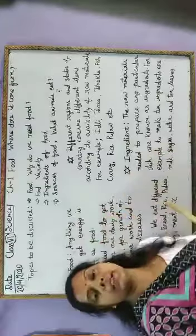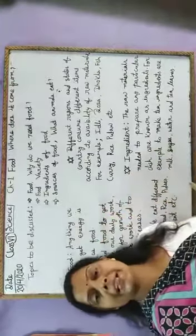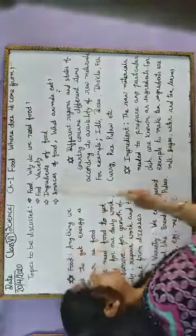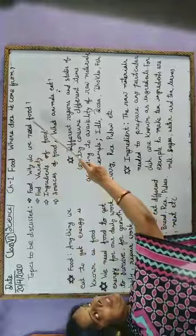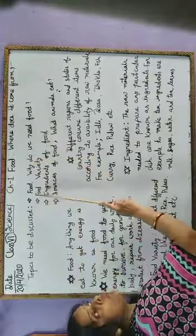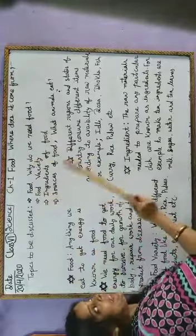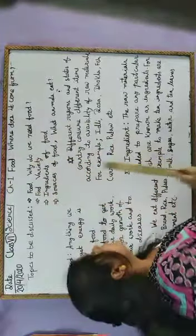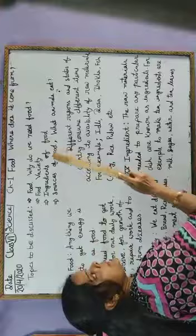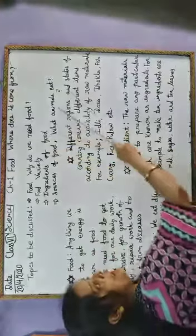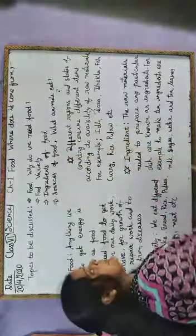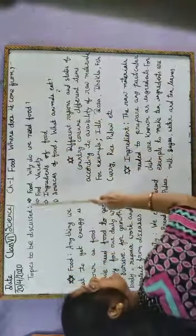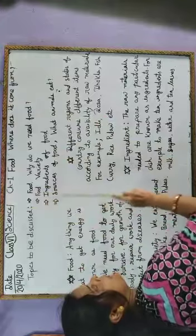In this chapter, the topics to be discussed are food, why do we need food, food variety, ingredients of food, sources of food, and what animals eat. Today we will complete the first three topics.